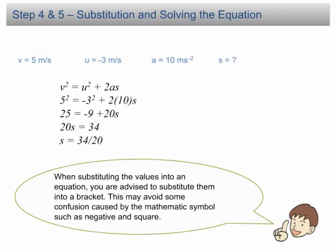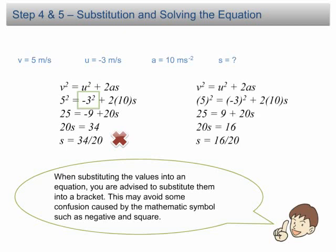Let's look at this example. If we substitute all the values into the equation without brackets, the displacement is equal to 34 over 20, which is not correct. The mistake is owing to the square of the initial velocity. If we repeat the calculation using brackets, we will find that the displacement is 16 over 20, which is the correct answer because the square of the initial velocity is calculated correctly.